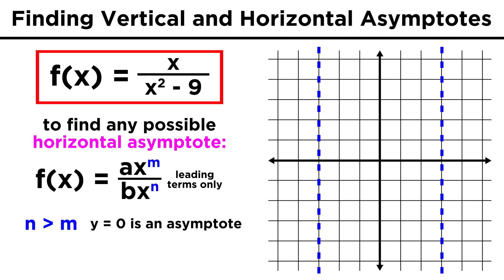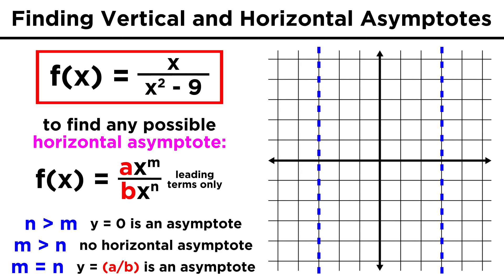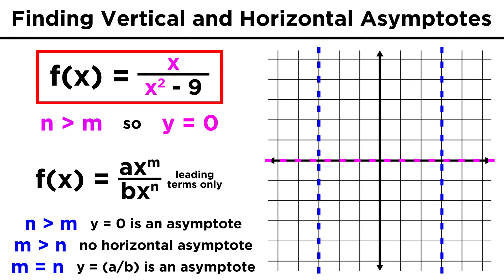If the denominator is a higher degree polynomial than the numerator, y equals zero will be an asymptote. If the numerator is a higher degree polynomial than the denominator, there will be no horizontal asymptote. If the two polynomials are of the same degree, then we take the leading coefficient of the top over the leading coefficient of the bottom, and y equals that number will be the horizontal asymptote. In this case, the denominator is of a higher degree as it is a quadratic, so y equals zero is the asymptote.